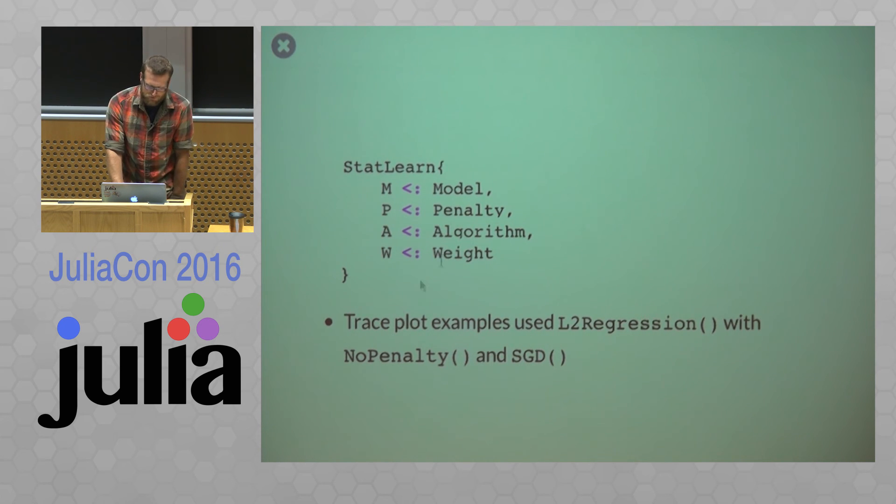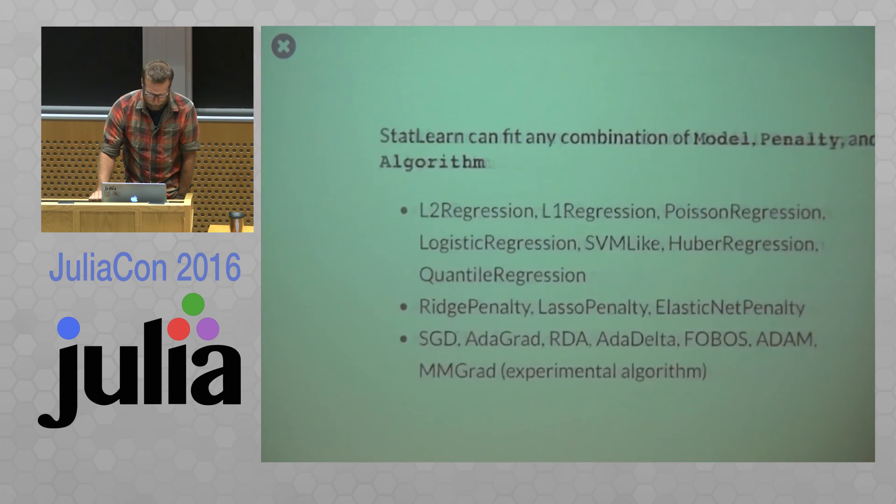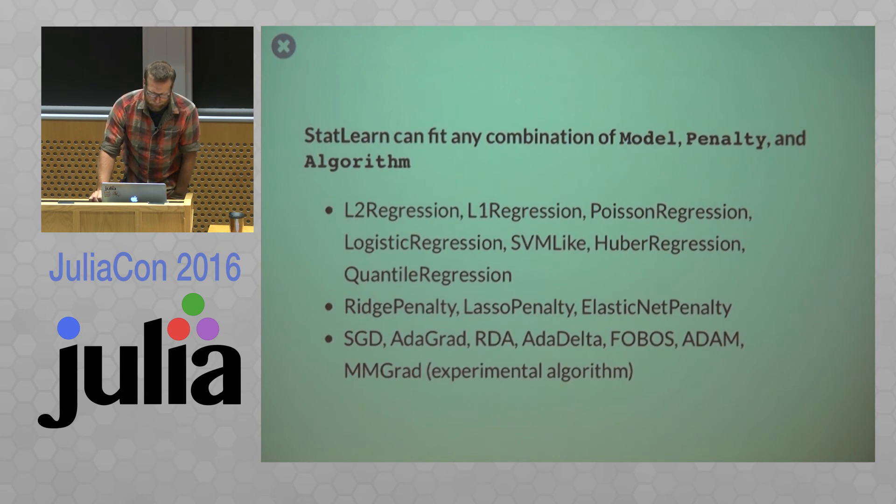So the trace plot examples we looked at earlier, so that was L2 regression with no penalty and SGD. So thanks to all of the really great stuff in Julia, like multiple dispatch and abstraction. So with this one simple type, you can fit any combination of model, penalty, and algorithm.